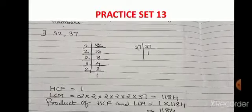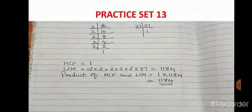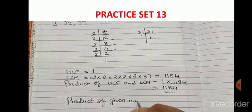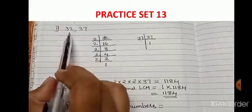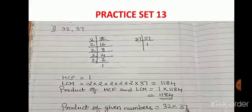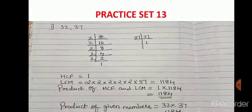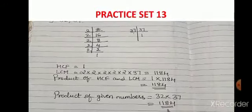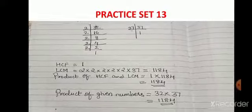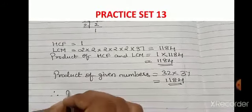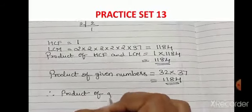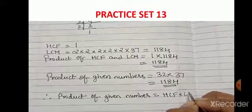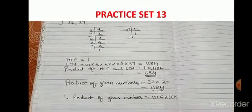Now we find the product of the given numbers: 32 × 37 = 1184. As you can see, the product of HCF and LCM equals the product of the two given numbers. We have verified that the product of given numbers is equal to HCF multiplied by LCM.